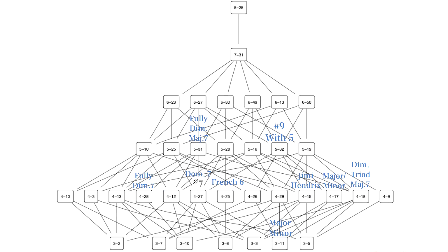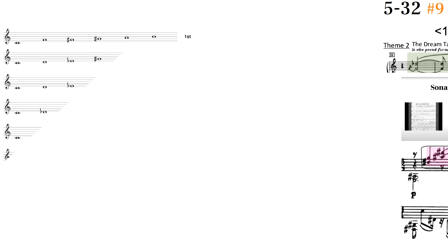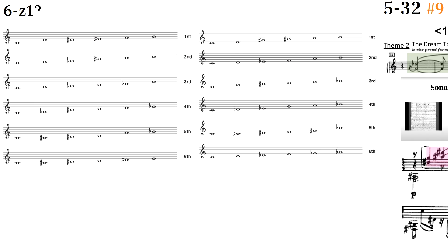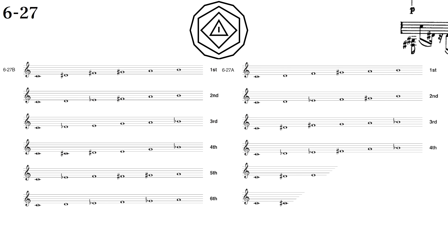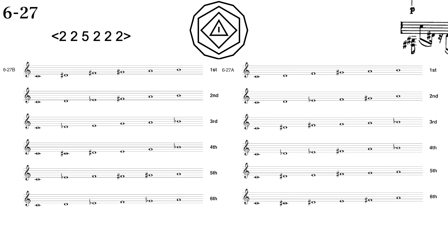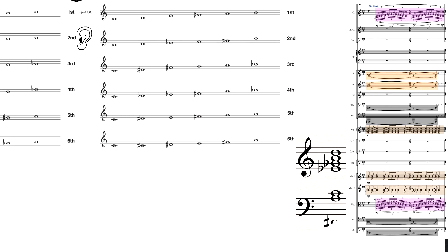Now let's go through all the octatonic hexachords. 6Z13 and 6Z23 are the first 6 notes in a row of each mode of the octatonic scale. 6Z13 is half step whole step in a row, and 6Z23 is whole step half step in a row. They're used more as melodies than as harmony. 6Z23 is one of my favorite octatonic sets, and yet I can't find many examples of it in Scriabin's music. I like to think of it as a fully diminished chord with a major 7th and 9th. Here's an example from my atonal orchestral piece where I move to this set to represent evil taking over.